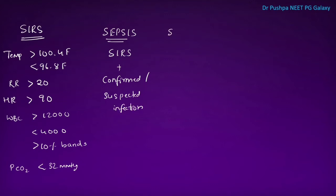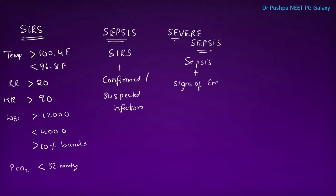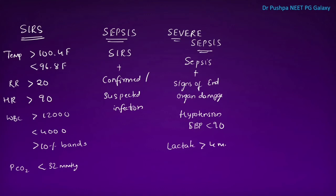What is severe sepsis? Severe sepsis includes sepsis — that means SIRS plus infection — plus there are signs of end organ damage and low BP, that is hypotension. Systolic blood pressure is less than 90, and lactate level is high, that is more than 4 millimoles.